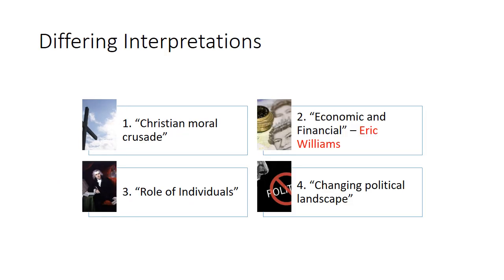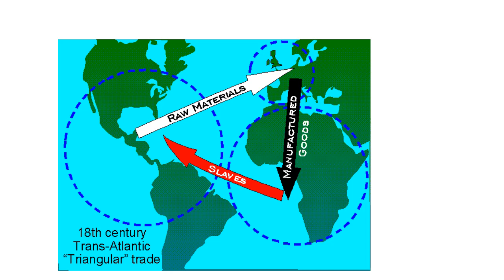Let's move on to the next argument, which is the economic argument. The historian here is a man called Eric Williams. He did lots of calculations and statistics and came up with the classic historical argument that slavery was abolished because it became uneconomical. As a reminder of the triangular trade: they sailed from the UK with guns and alcohol, exchanged them for slaves on the West Coast of Africa, then sailed to the Americas — called the Middle Passage — sold the slaves, and brought back raw materials like sugar to the UK.